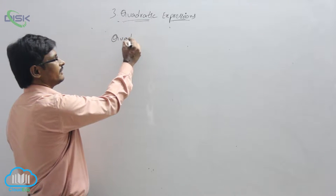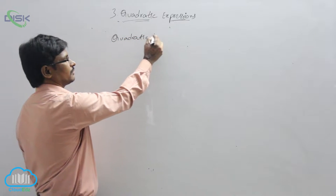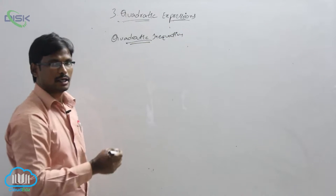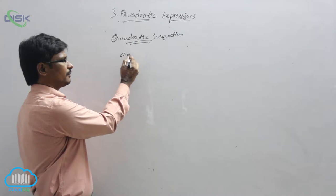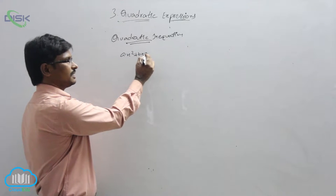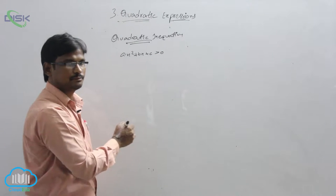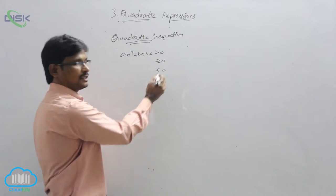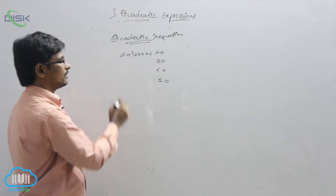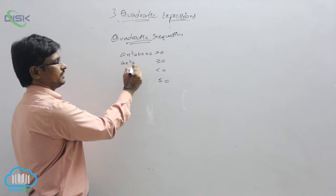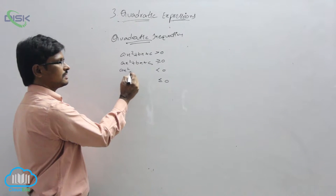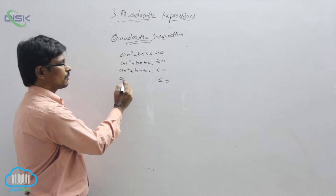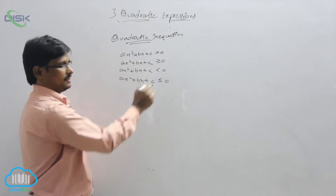We will discuss quadratic inequation. A quadratic inequation is in the form Ax² + Bx + C greater than 0, greater than or equal to 0, less than 0, or less than or equal to 0. It is called a quadratic inequation because the degree is second degree. These are the different cases.